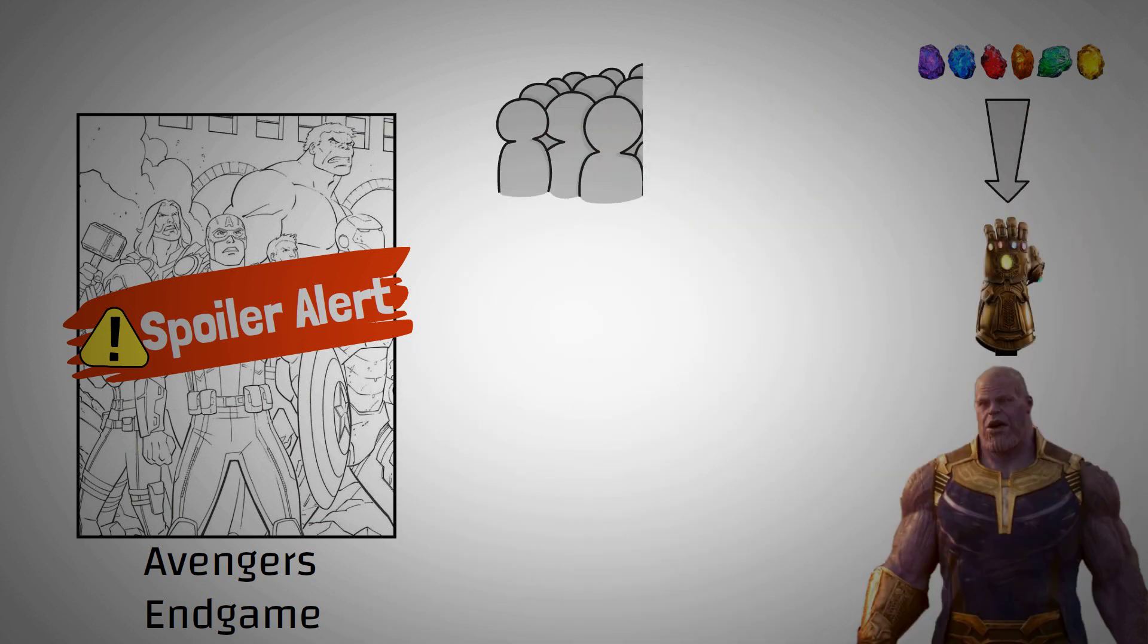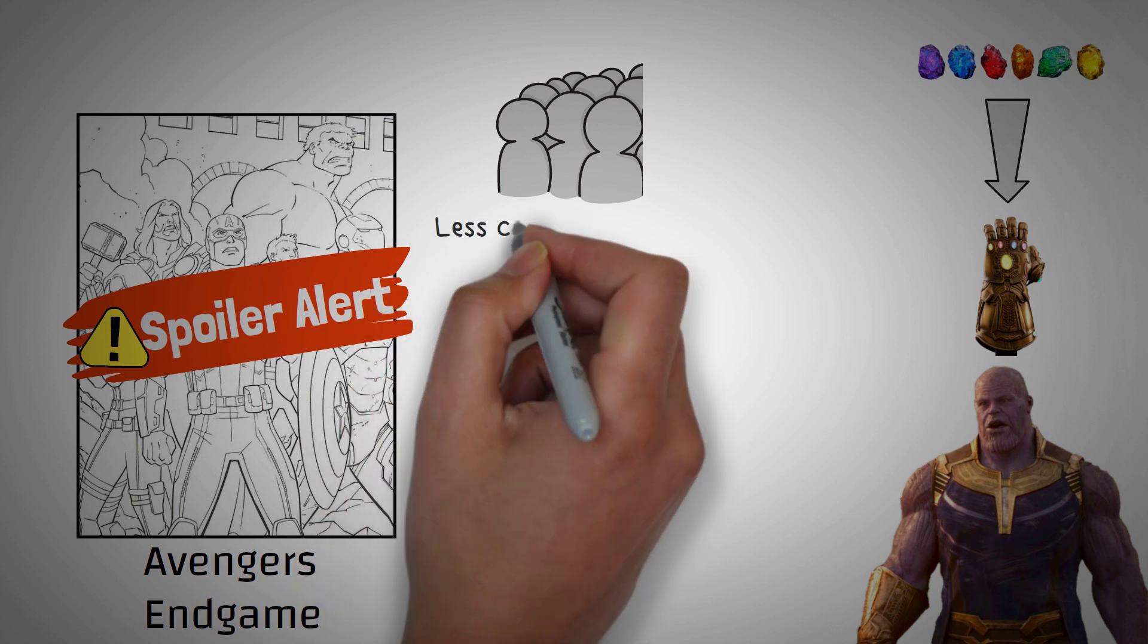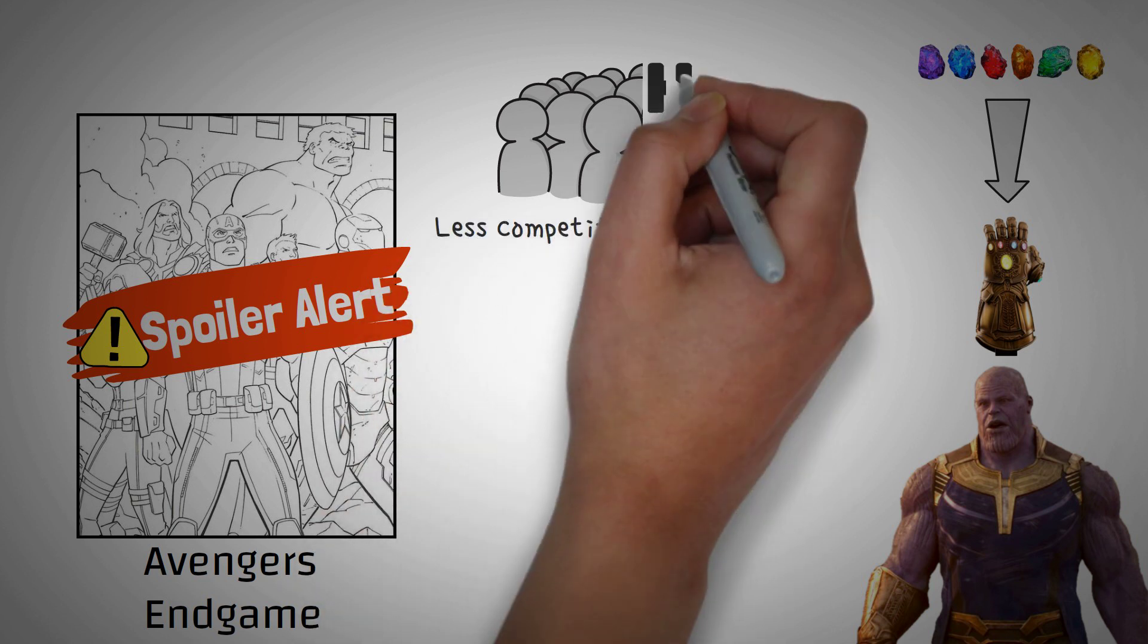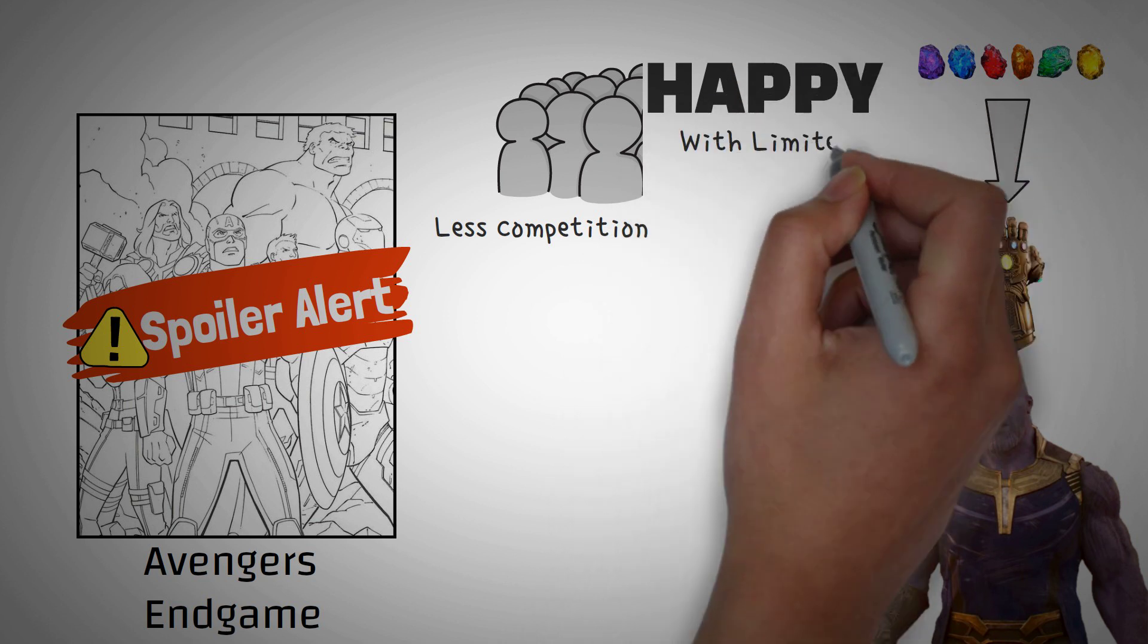In the movie Endgame, Thanos' main motive is to find all the stones for the Infinity Gauntlet, and then he wants to snap and wipe away half of the population from the world. His vision is that with a lower population, there would be less competition, and thus, people would be happier with the same amount of resources.